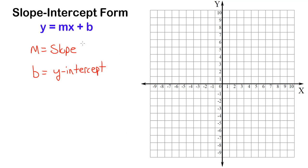The reason why slope-intercept form of a linear equation is important and useful is because it is very easy to graph a linear equation written in slope-intercept form — because all you really need are the slope and the y-intercept.